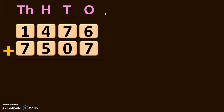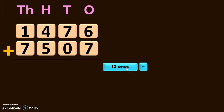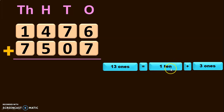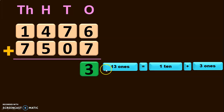For addition, you should always begin by adding from the ones place. In the ones place, we have 6 plus 7, which will give you 13 ones. By applying the concept of regrouping, 13 ones is nothing but 1 ten plus 3 ones. So you retain the 3 in the ones place and take the 1 as a carryover to the tens place.